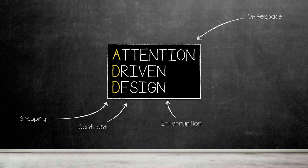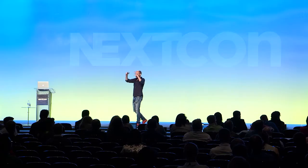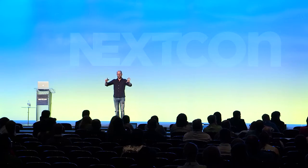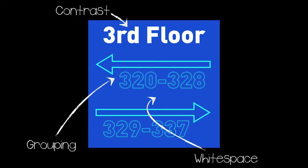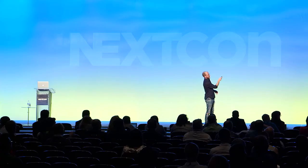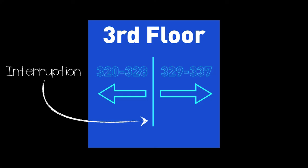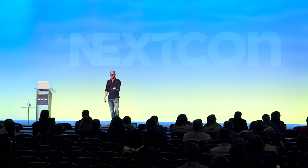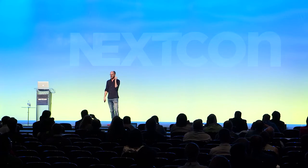I used four of them to try to fix this problem. First, contrast: make the headline appear differently because these are semantically different — this is where you are, this is where you're going. Third floor — I know where I am. Move on. Grouping: the numbers that correspond to the door range — put them together with white space. 8% went the wrong way. Making progress. I added some interruption to split them apart — this way and this way. Everybody went the right way. Way fewer perverts in the hotel, which is good for everyone.